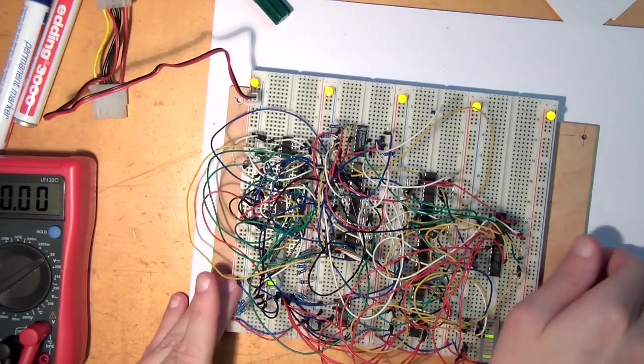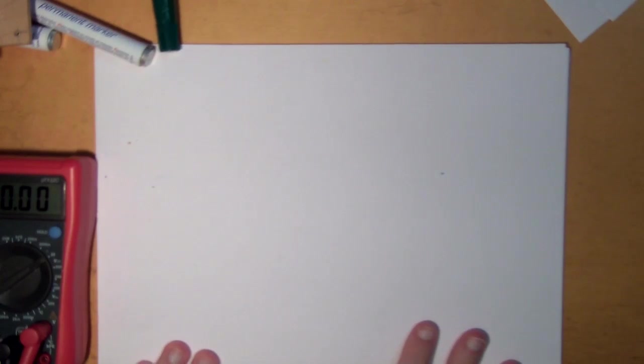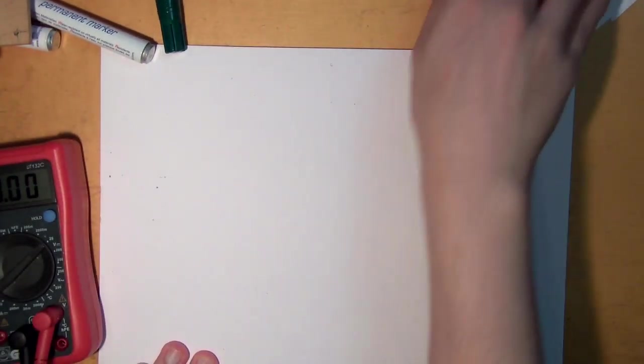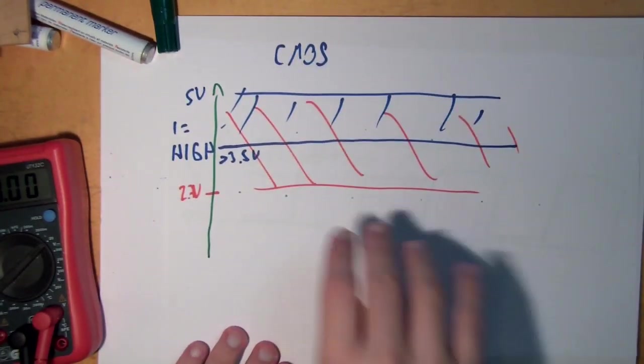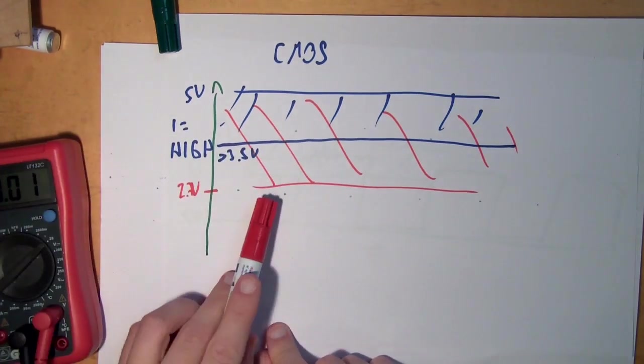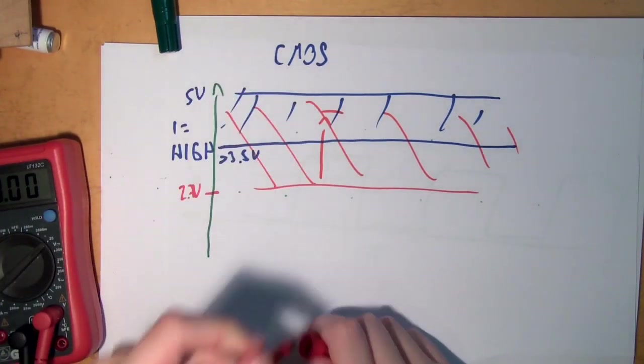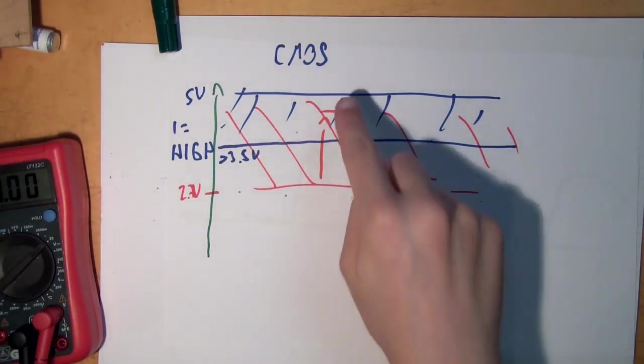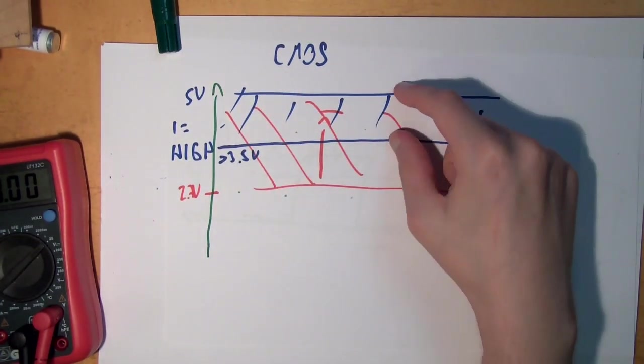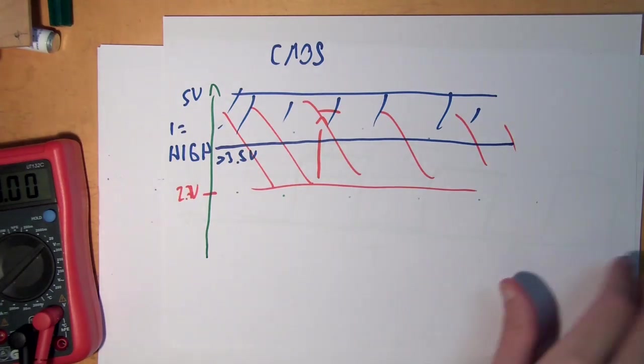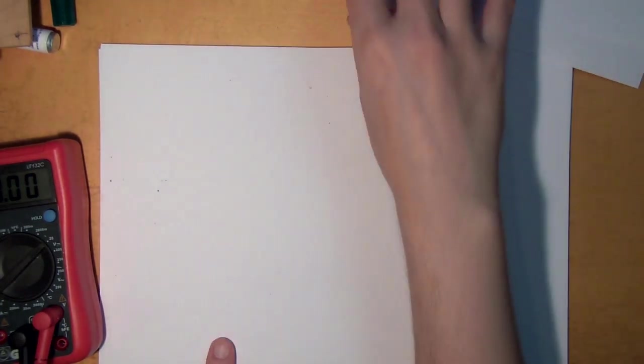The process of changing your voltage up or down is called level shifting. So what we actually want to do right here is we want to take this red line and we want to move this red line up until it's about here, so that we are in the high area of our CMOS. So how do we do this?